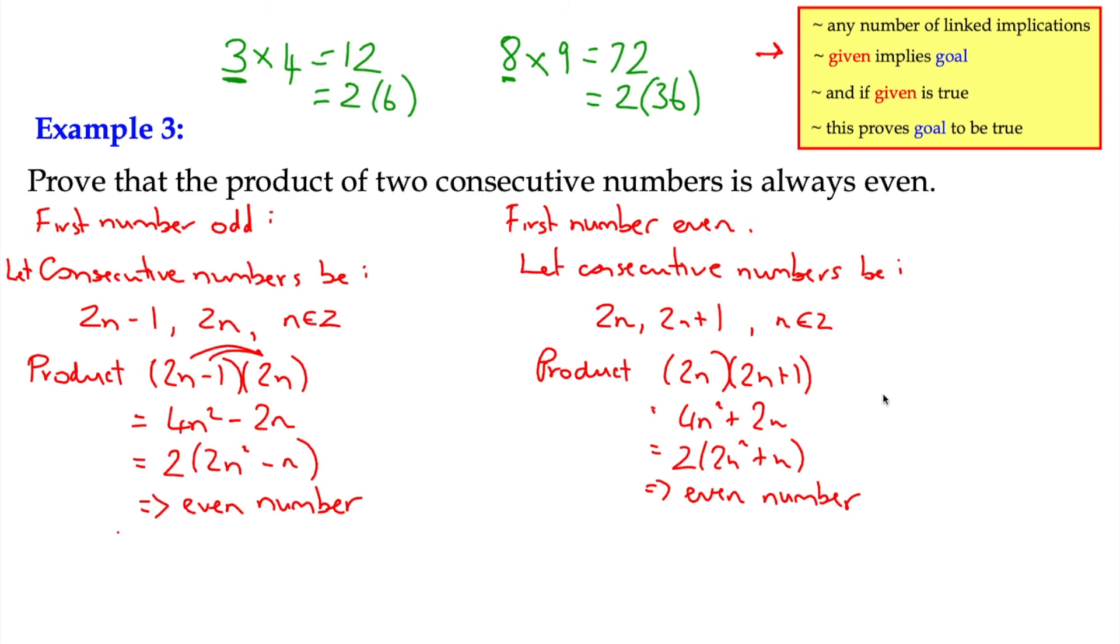That's a direct proof, because it shows that for any potential value of n, the product is even. So we can finish off by going with the idea, the given is that the numbers are consecutive. So we can say, given the numbers are consecutive, their product is even.